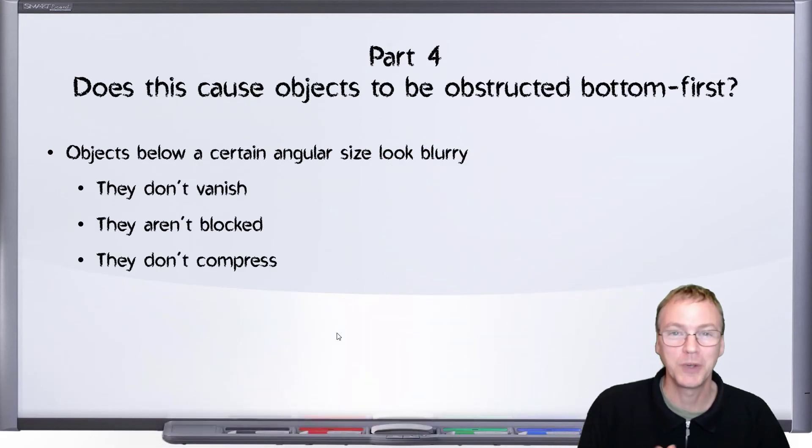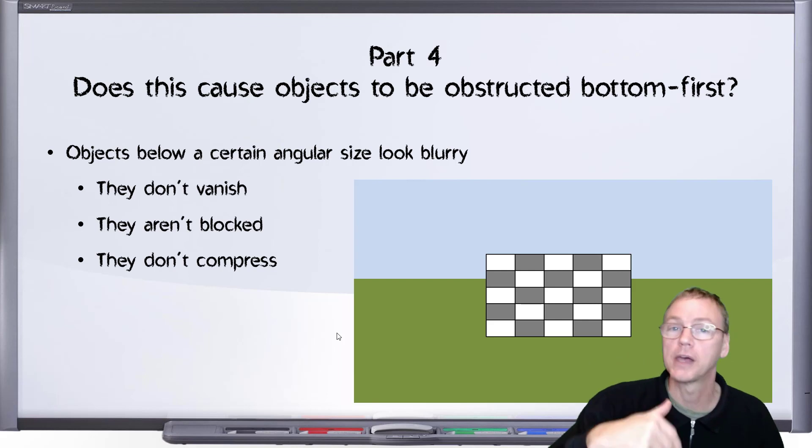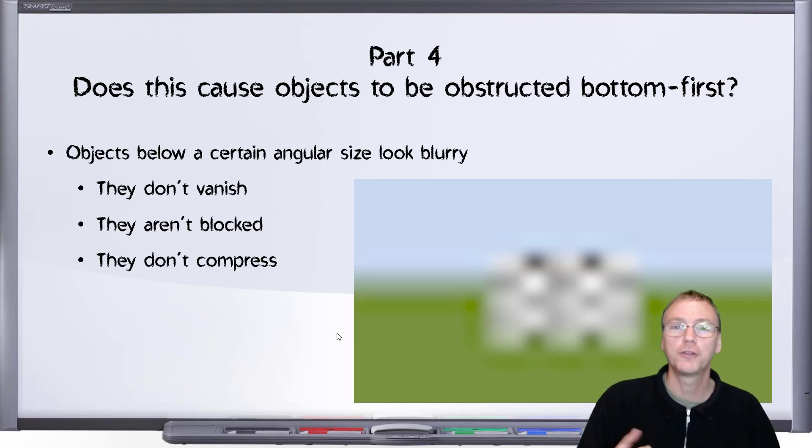The distance of an object can cause its angular size to shrink and get smaller and smaller as it moves into the distance, and the diffraction limit causes these things to become blurry no matter how good the resolution of your sensor might be. Beyond a certain limit, the object will become blurry and indistinct to where you can no longer make it out.